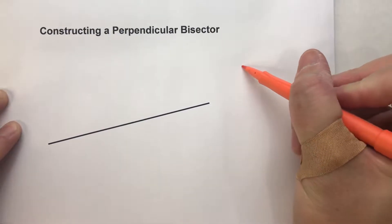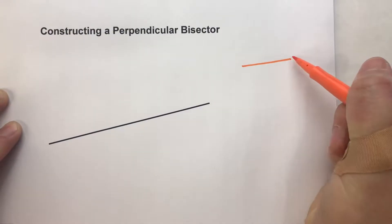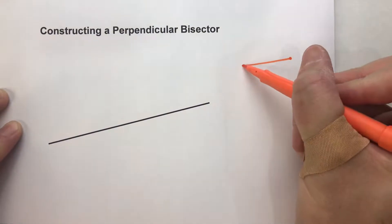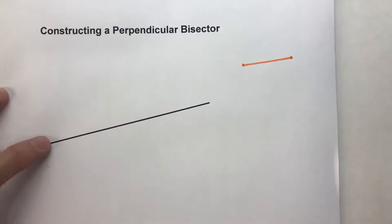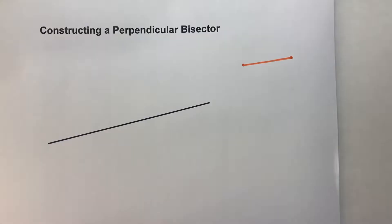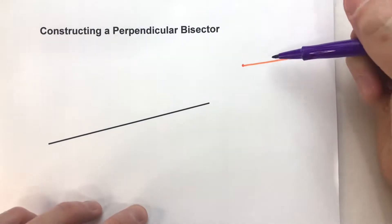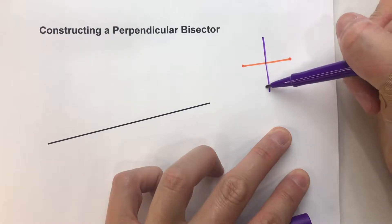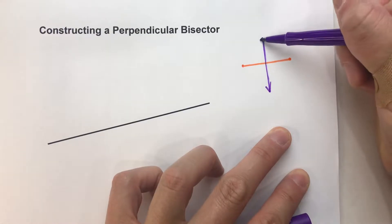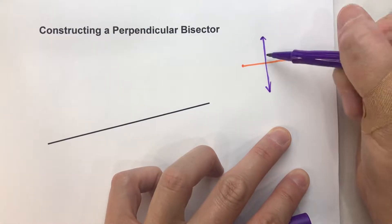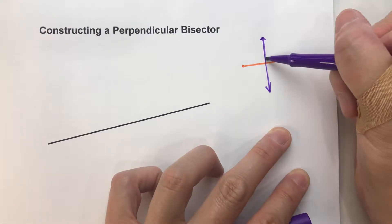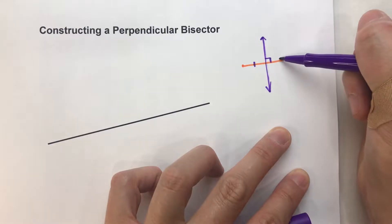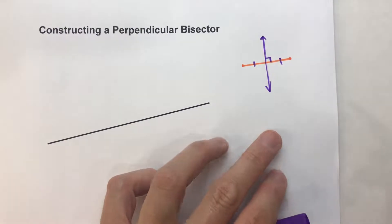So over here, I'm just going to sketch a line segment. I'll even draw the endpoints on it. And the perpendicular bisector is going to go through the middle of it, somewhere about here, but we know it's perpendicular and we know it's a bisector, so I'm going to mark it as such.